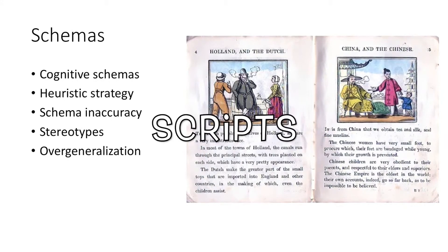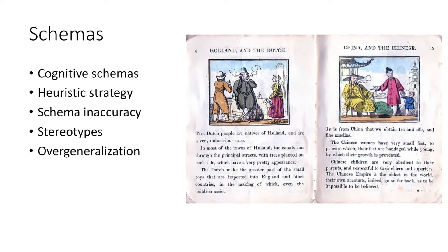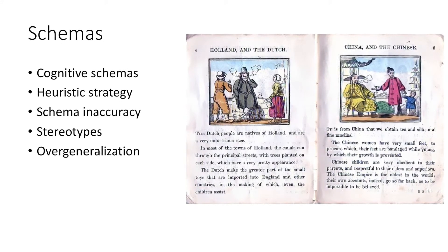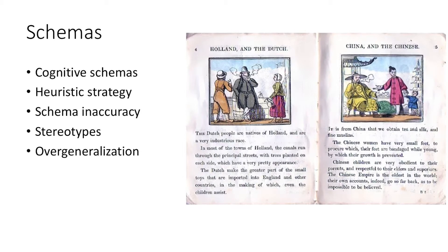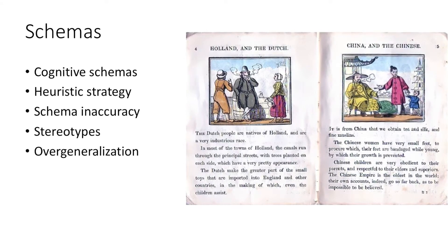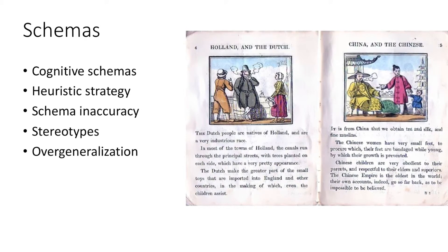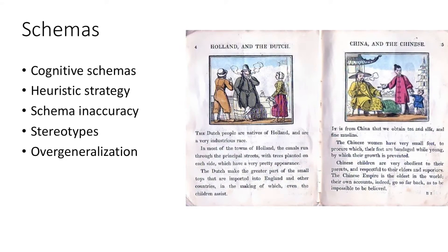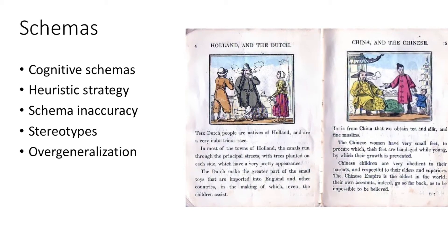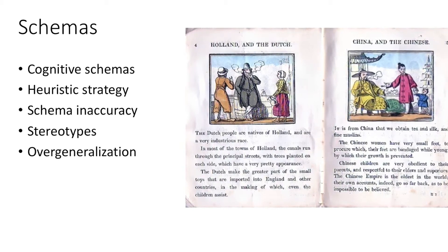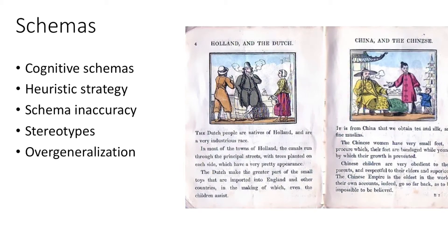Scripts are schemas for certain contexts or situations. Heuristic strategy is a shortcut — a fast, complex judgment that relies on schemas to fill in the gaps. Since we rely on these heuristics, our schemas can be rather inaccurate. We notice information, even if ambiguous, that is consistent with our own expectations, and thus confirmation bias can influence us since we overlook information that is not consistent with our schema and confirm our own theory of others.